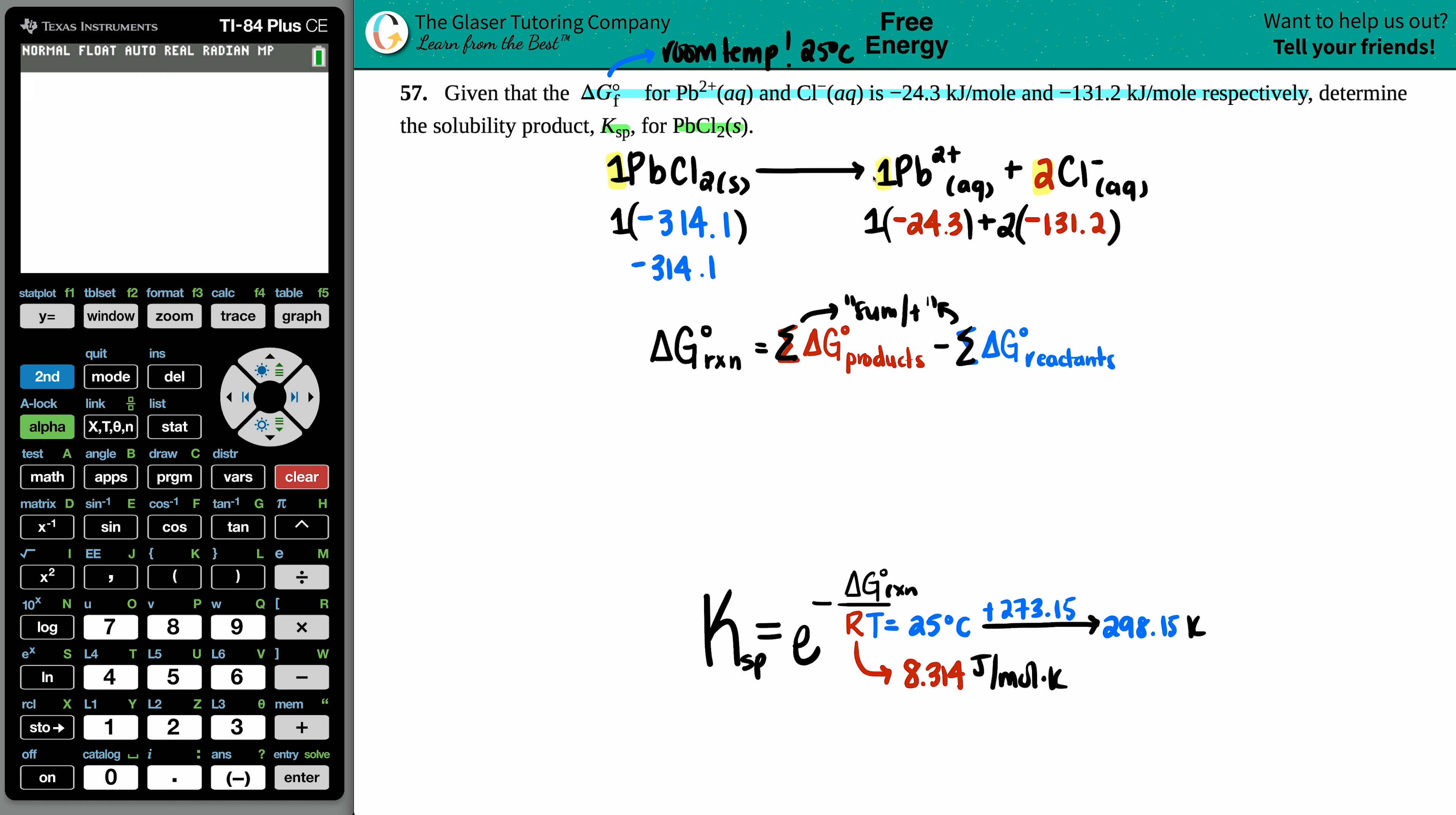I have -24.3 plus two times -131.2, which equals -286.7. Now I can plug into my equation: ΔG_rxn equals the sum of products (-286.7) minus the sum of reactants (-314.1). That equals -286.7 minus a negative 314.1, which comes out to 27.4 kilojoules.